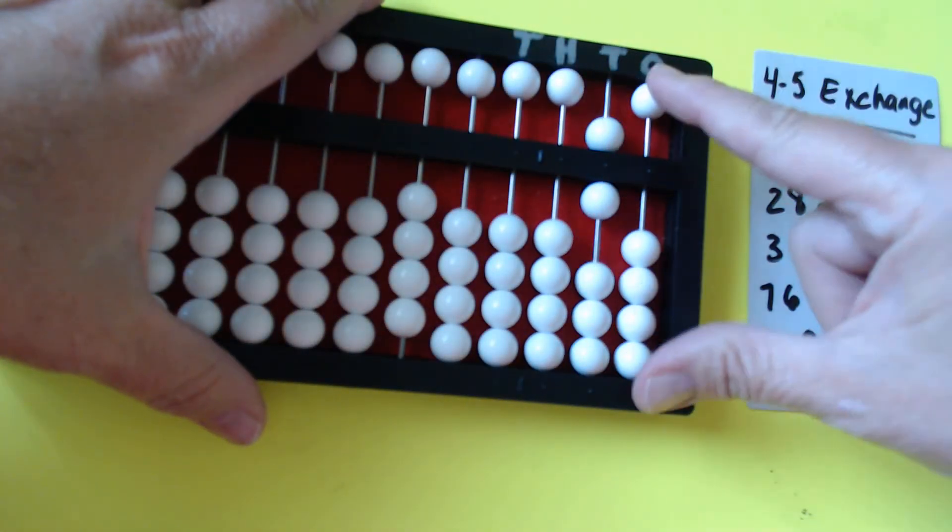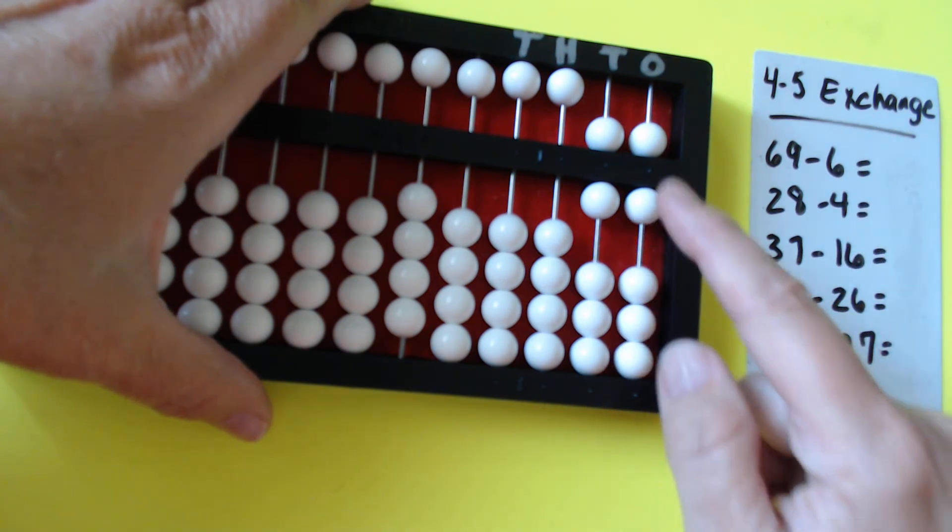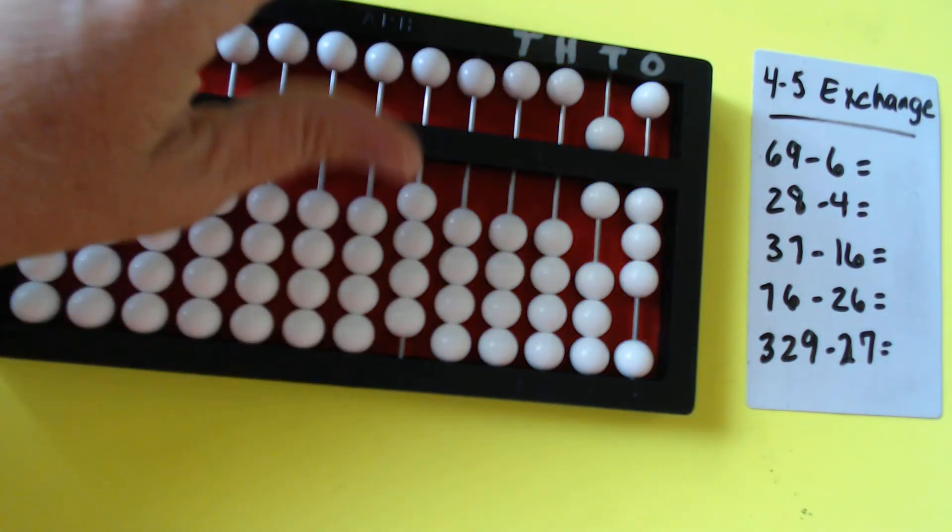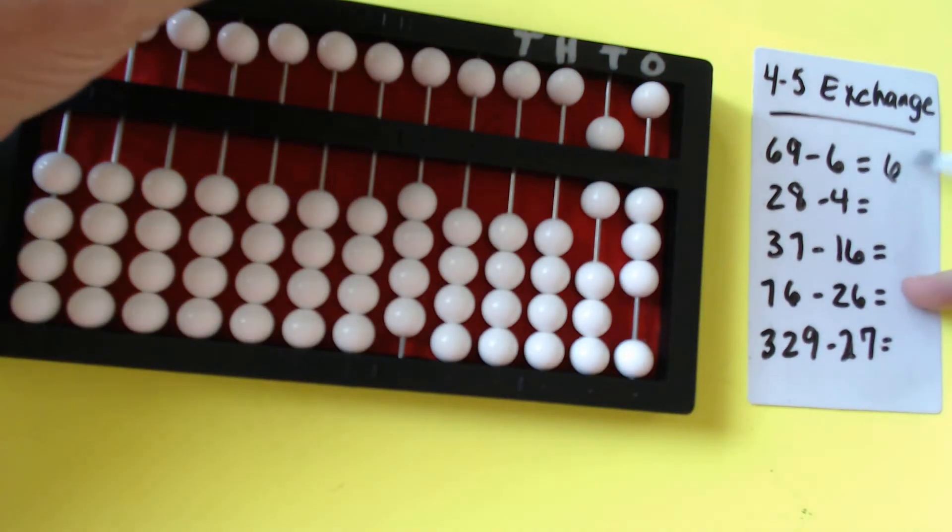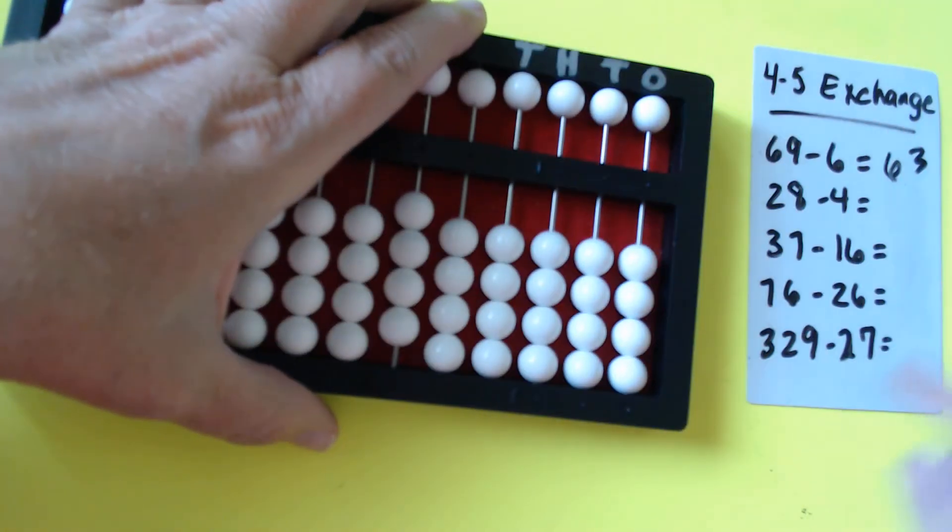Let's set 69. We subtract 6: 1, 2, 3, 4, 5, 6, and our answer is 63. Alright, let's clear it out and set the next one.